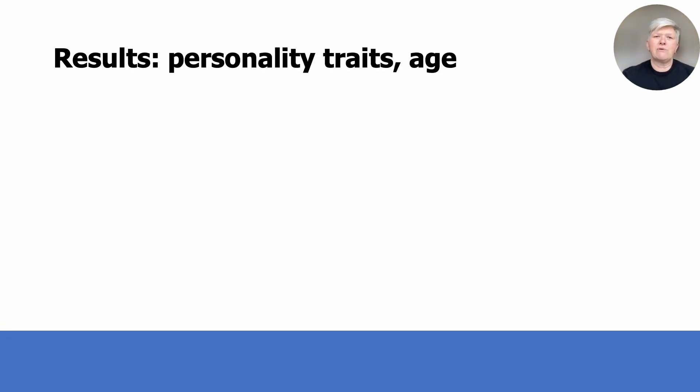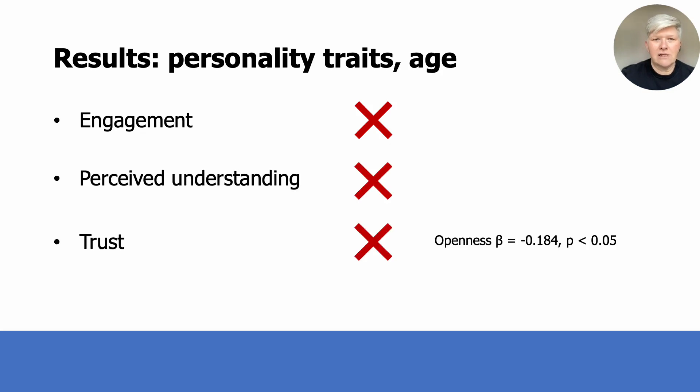We then ran more multiple linear regression models using personality traits. We also included age in this, as our initial models had shown it to matter in some cases. We again found that these user characteristics did not affect engagement, perceived understanding, and trust, with the proviso that openness was significant in trust. And again, we found that actual understanding was implicated. Again, age mattered, but also openness. The weight of openness means that the more open your personality is, the less you score on actual understanding.